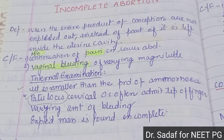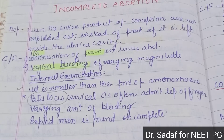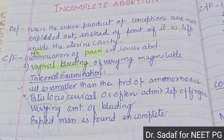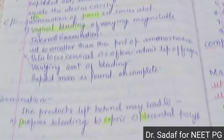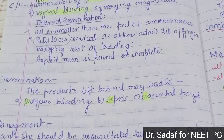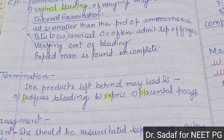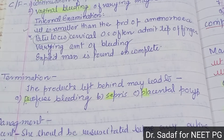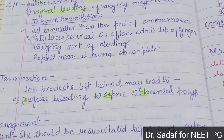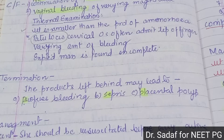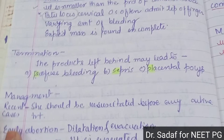The bleeding is in varying amount and the cervical os is patulous, admitting the tip of a finger. On examination, products of conception can be found to be incomplete. The product left behind may lead to significant complications including heavy bleeding, sepsis, and placental polyps if not removed.